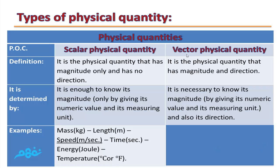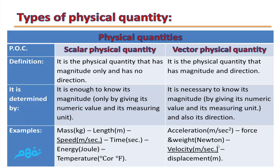Examples of vector physical quantities: Acceleration (meters per second squared), Force and Weight (both measured in Newtons), Velocity (meters per second), and Displacement (meters). All these quantities are vector physical quantities because to be defined, we must know both their magnitudes and their directions.